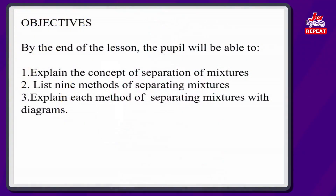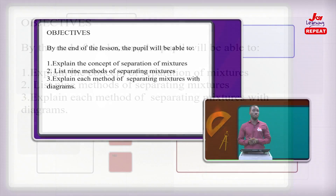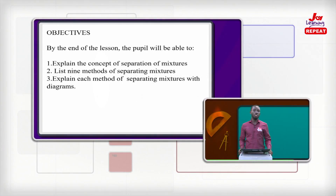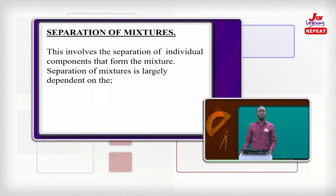Now let's try to look at our objectives. By the end of the lesson, people will be able to: one, explain the concept of separation of mixtures; two, list nine methods of separating mixtures; and last but not the least, explain each method of separating mixtures with diagrams. There are actually more other ways of separating mixtures, but per the junior high school syllabus, we're going to go for only nine.